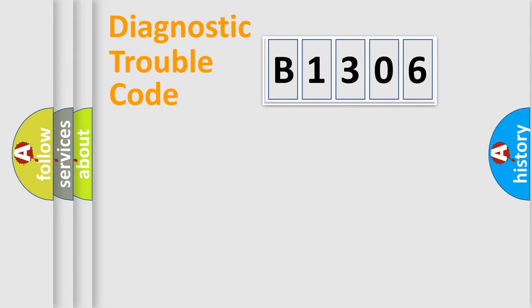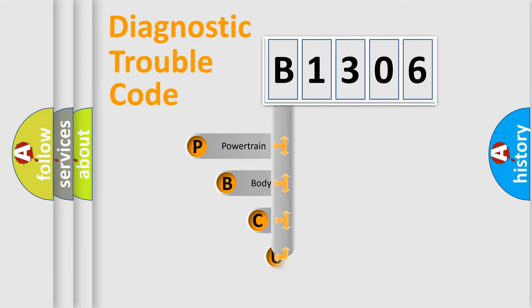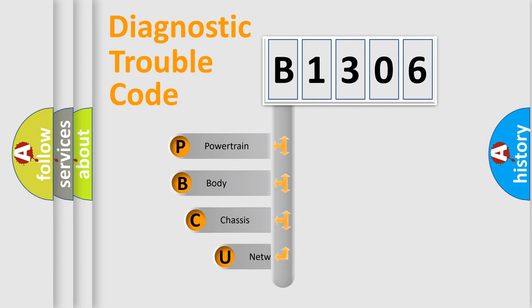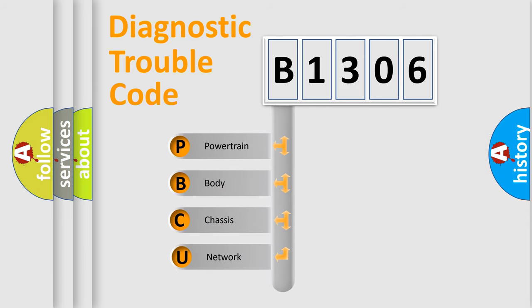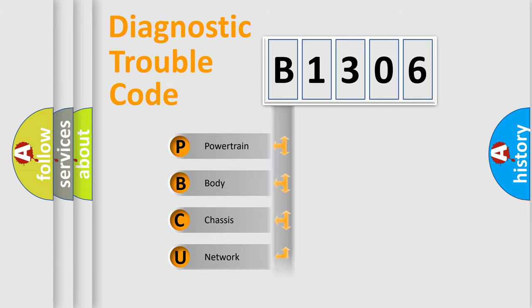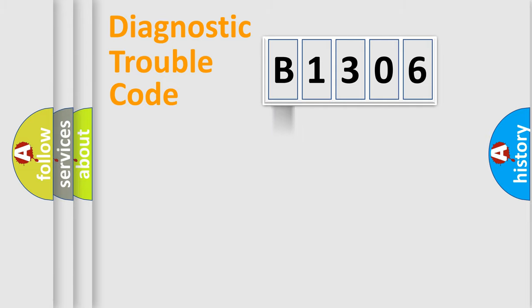Let's do this. First, let's look at the history of diagnostic fault code composition according to the OBD2 protocol, which is unified for all automakers since 2000. We divide the electric system of an automobile into four basic units: Powertrain, Body, Chassis, and Network.